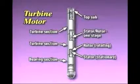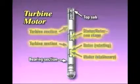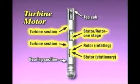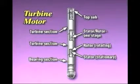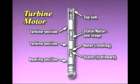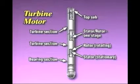A turbine motor consists of multiple rotor stator assemblies that drive main thrust bearing sections. These tend to have narrower operating ranges than positive displacement motors, and unlike PDMs, they can't accommodate bent housings.